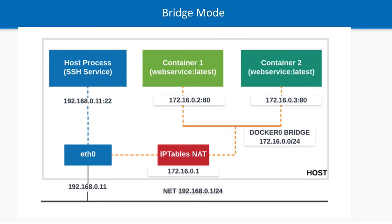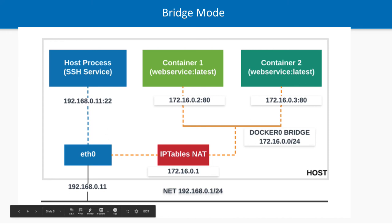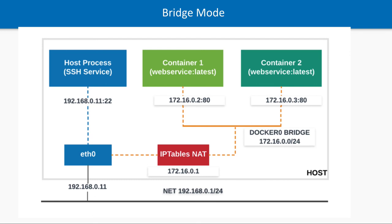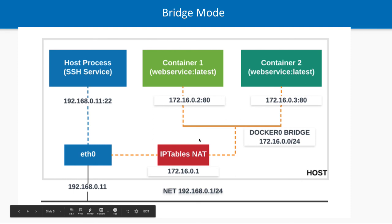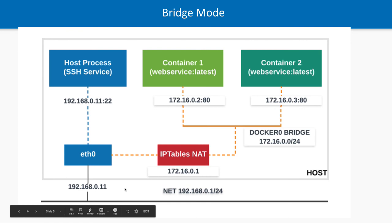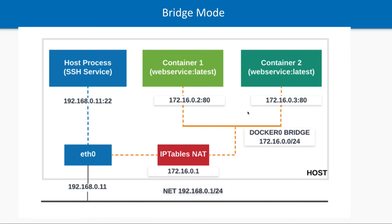The other mode is bridge mode networking. In that case, you will have many containers, and multiple Docker containers will create a Docker bridge through which these containers can also talk to one another — that is called an internal network. You'll see this in Docker Compose, where different containers create a single Docker network or bridge where they can talk to each other, while also being accessible to the outside world through exposed ports, and each container has its own IP assigned.